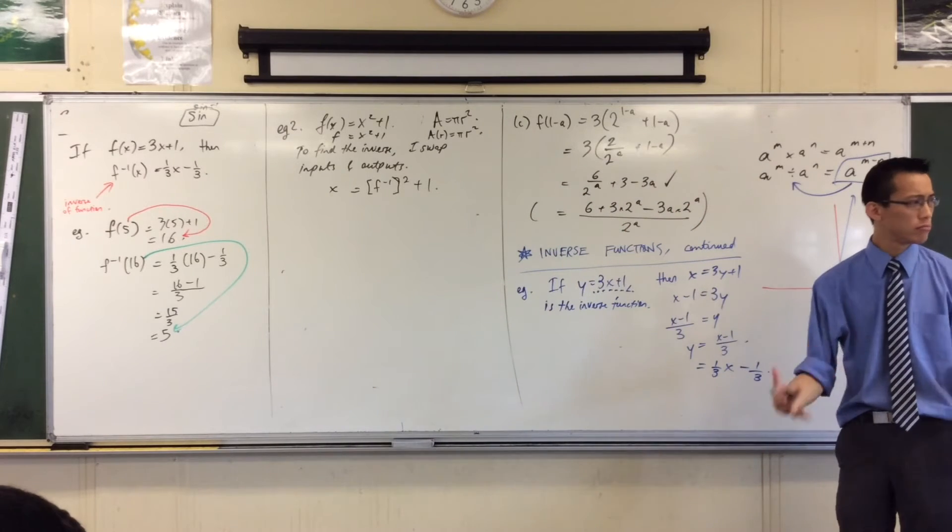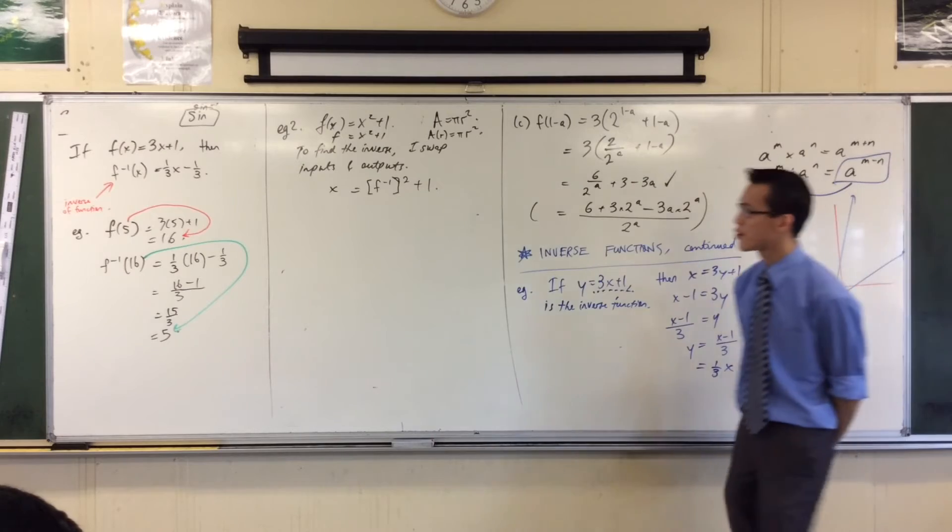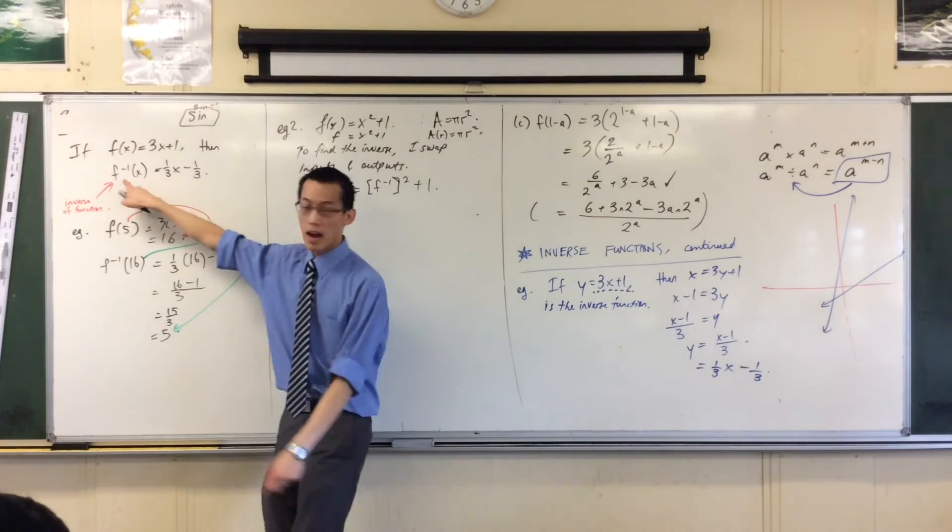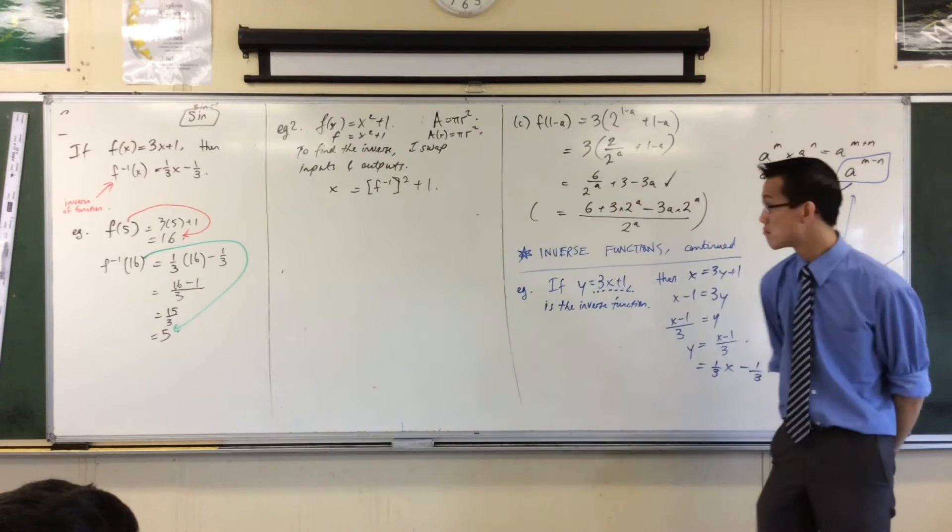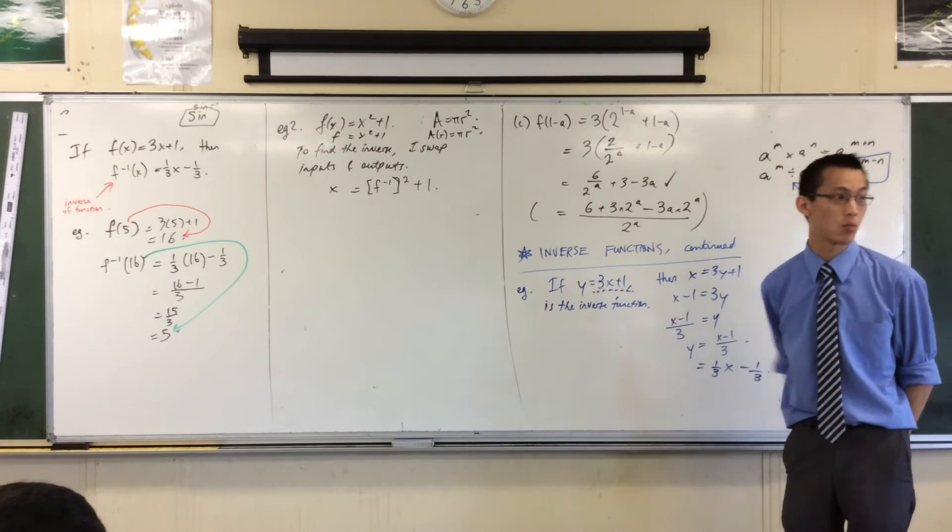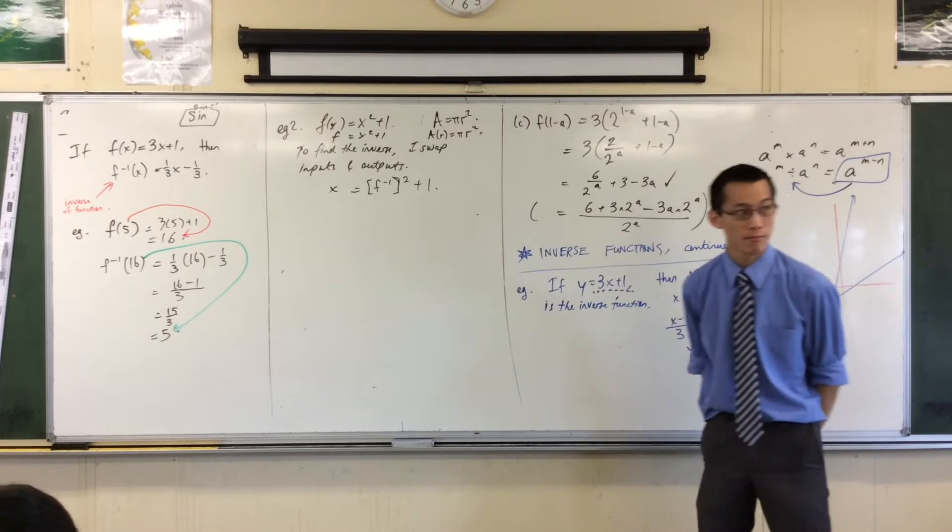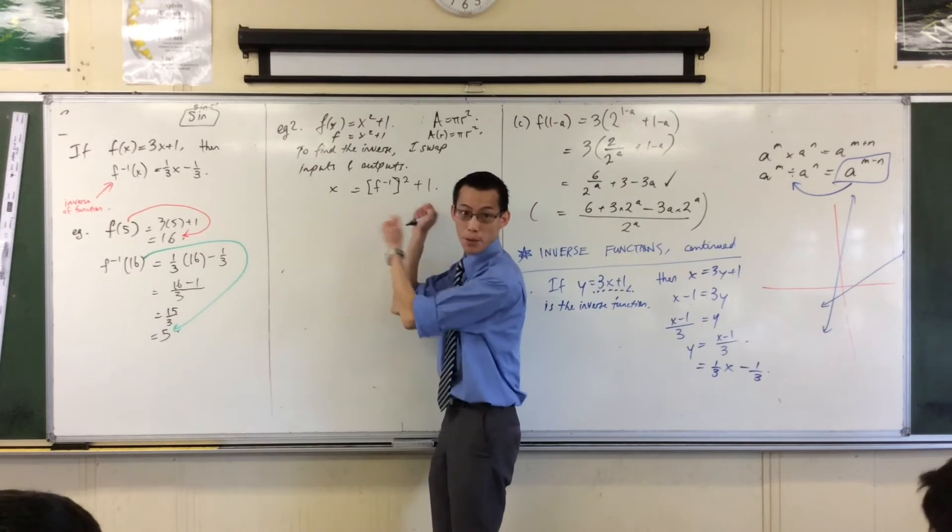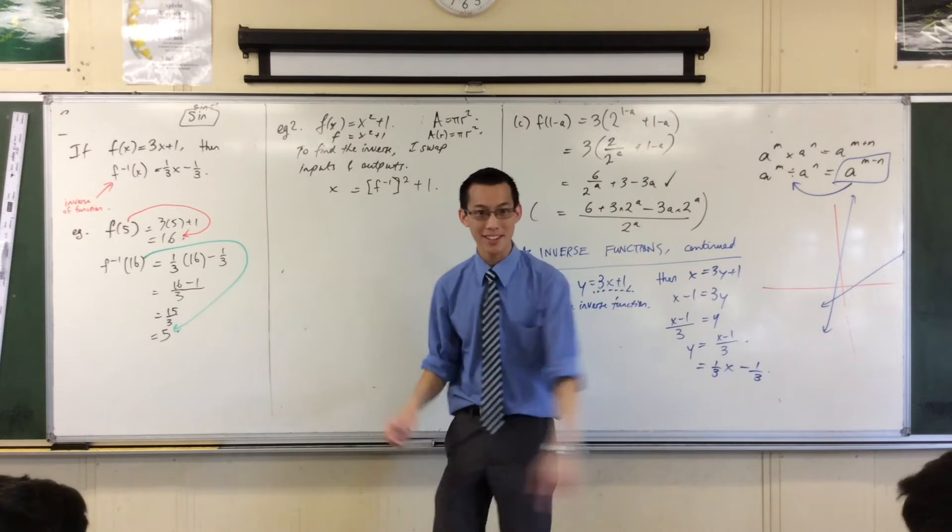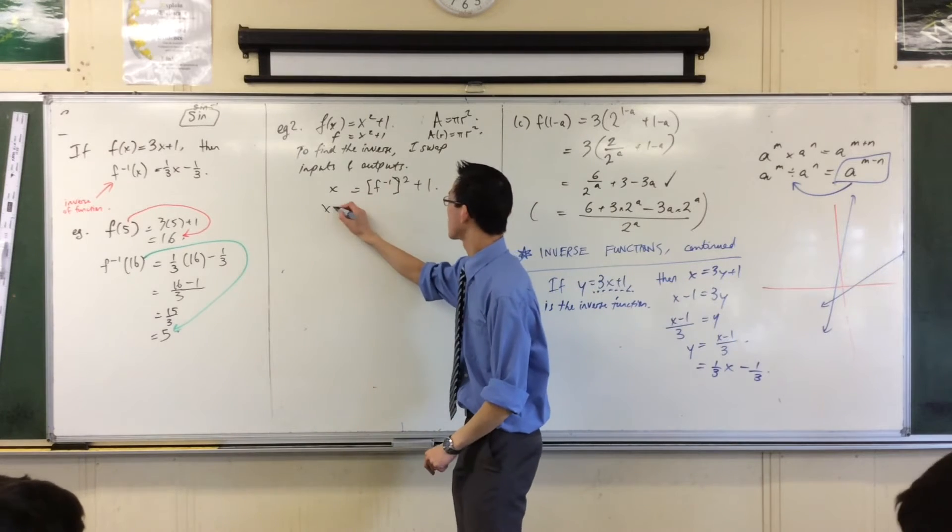Okay, can we rearrange this a little bit so that just like I have here, I've got f inverse, I make that the subject? Can we do it? Do you think we can? Let's have a shot. Can you give me a suggestion? What might I do as my first line? Yeah, good. I'm going to subtract one from both sides. Okay, that seems familiar. Let's just quickly do it: x - 1.